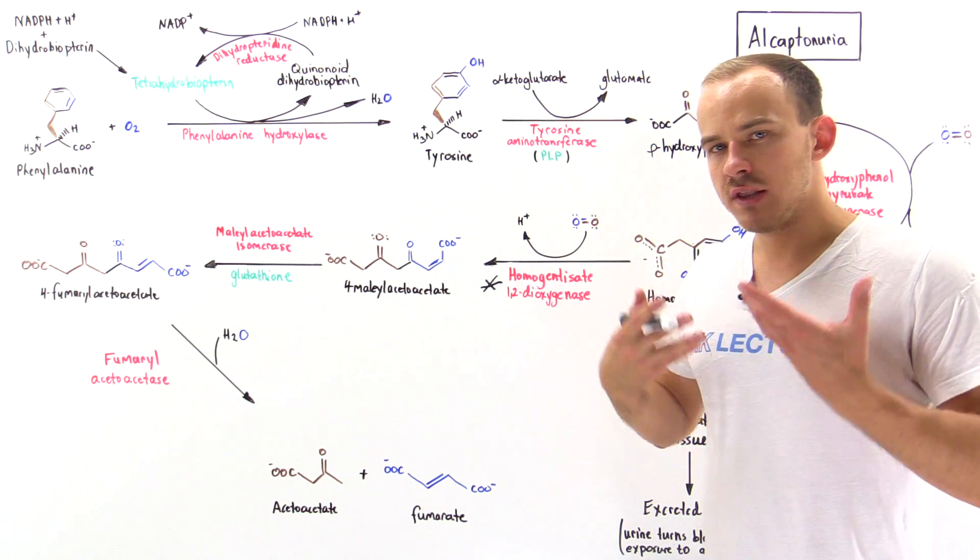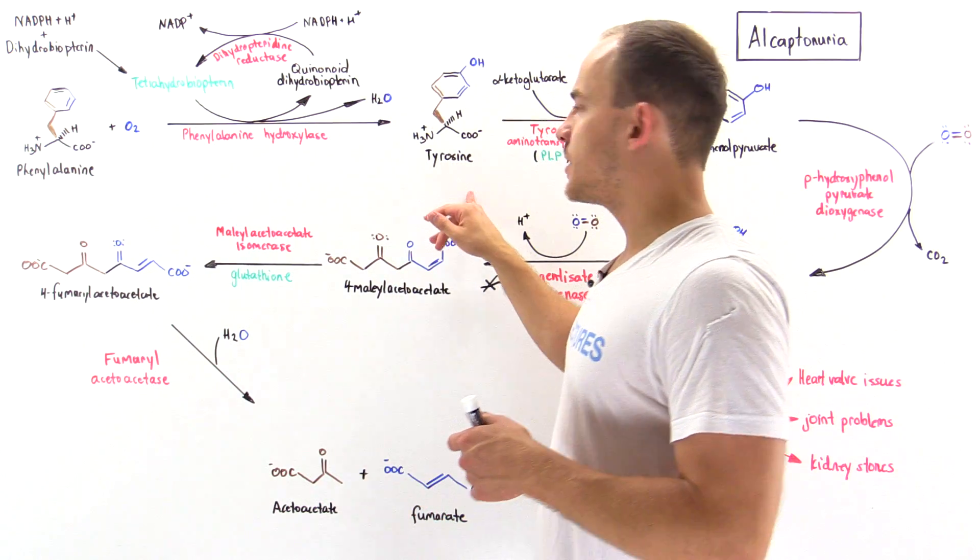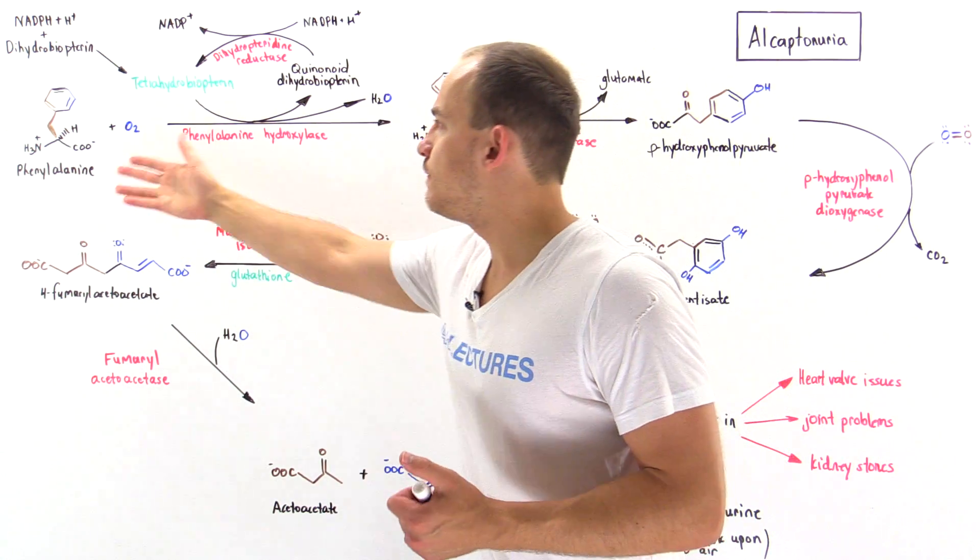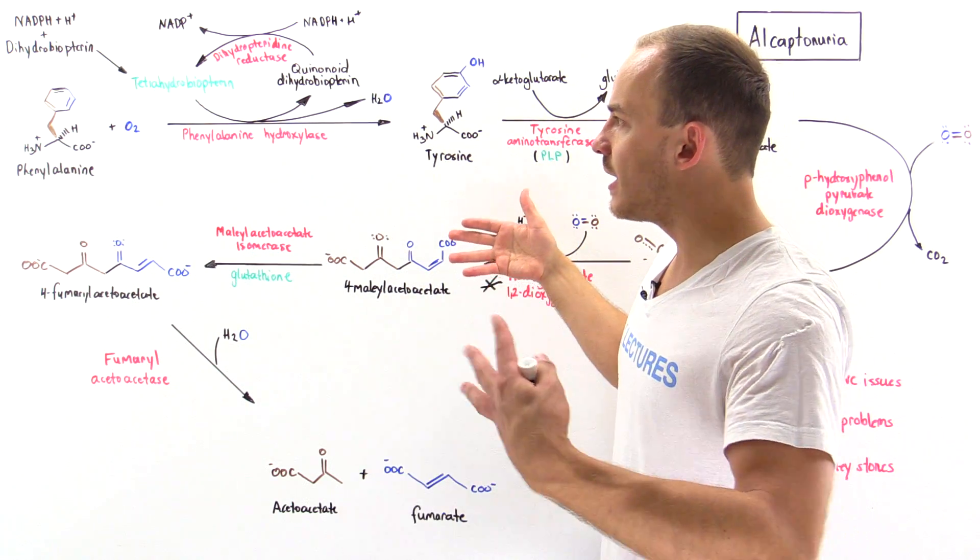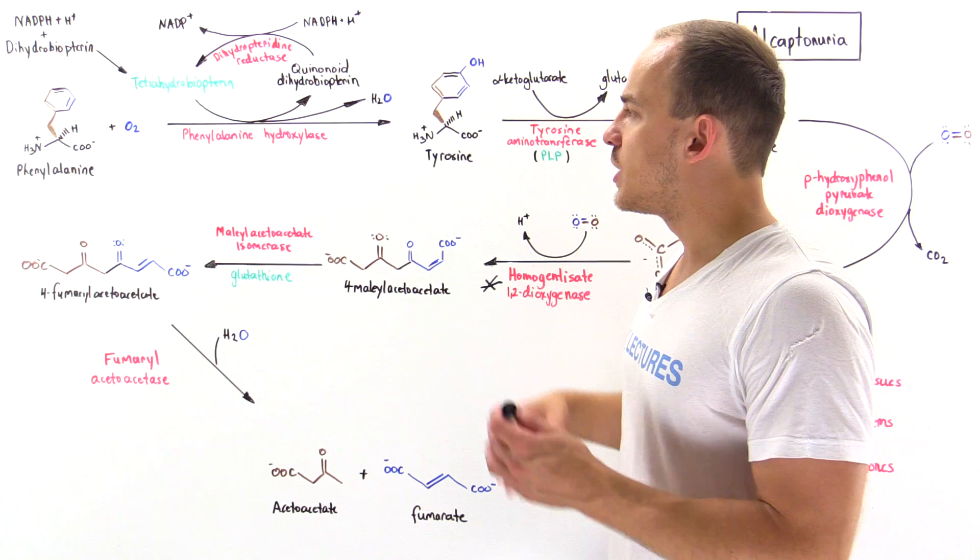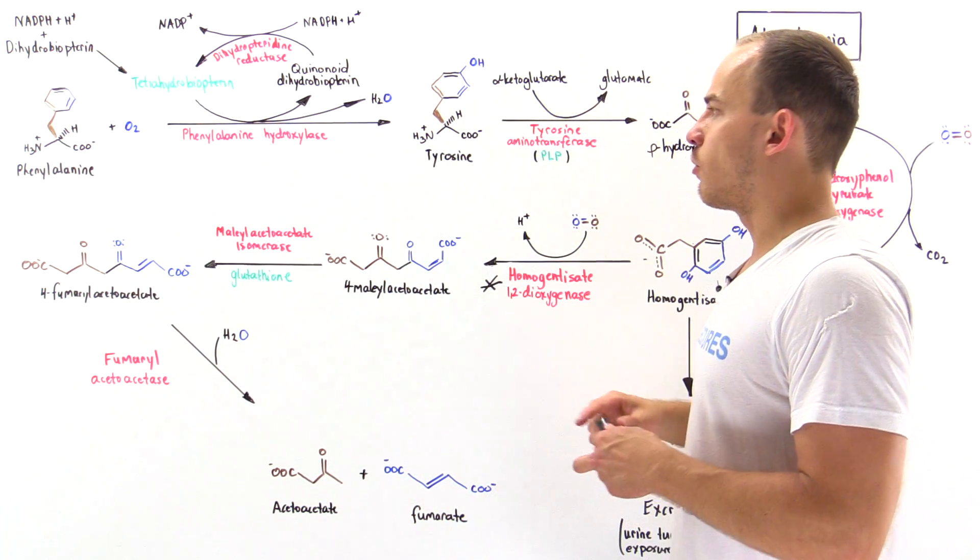Normally within our liver, the cells break down phenylalanine into tyrosine or use phenylalanine to form tyrosine via this pathway. The enzyme that catalyzes this step is phenylalanine hydroxylase. It uses a cofactor tetrahydrobiopterin to form tyrosine.